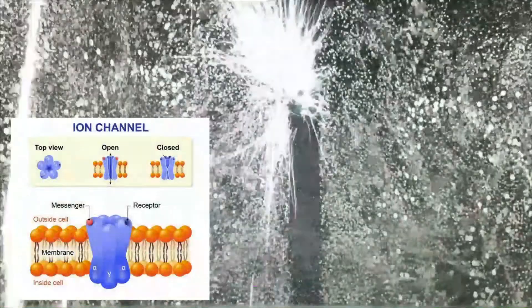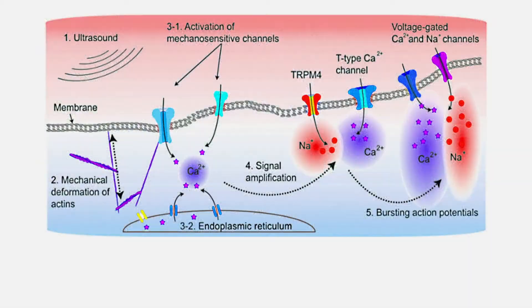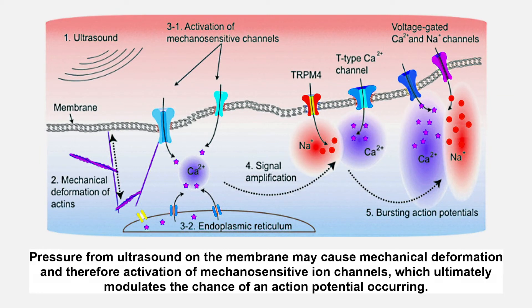When neurons in the brain communicate, for example by sending action potentials, ion channels are opened and closed to control the voltages in the cell. The ultrasound waves of TFUS are thought to create pressure on the cell membranes, and consequently also on the ion channels. Thus, by this added pressure, it may become slightly easier or slightly harder for an ion channel to open.